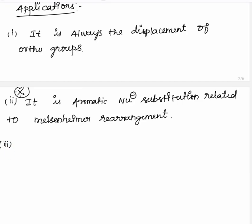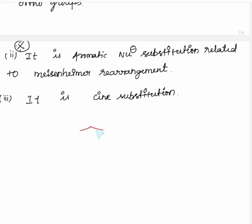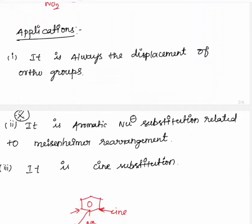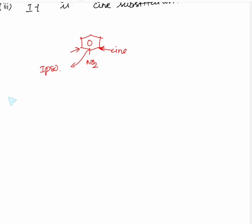Cine substitution occurs on either side of the ipso carbon. Cine substitution must have an electron withdrawing group present, especially a nitro group. Another application: ortho-para reactions undergo, but not the meta position.